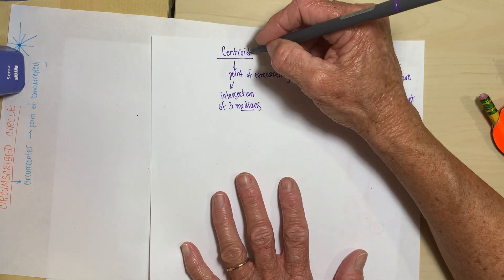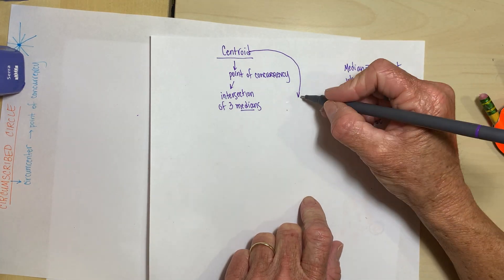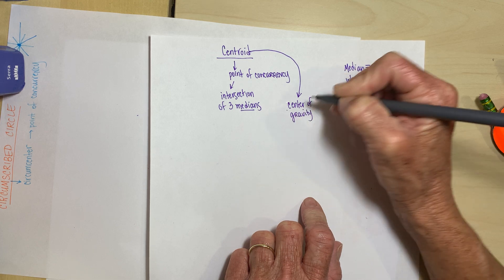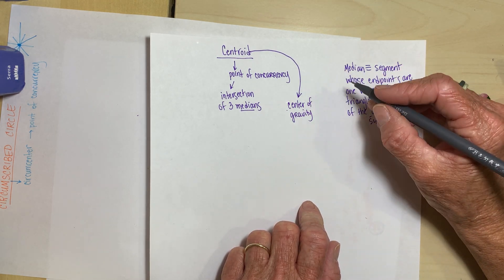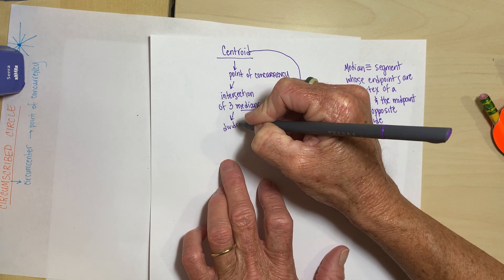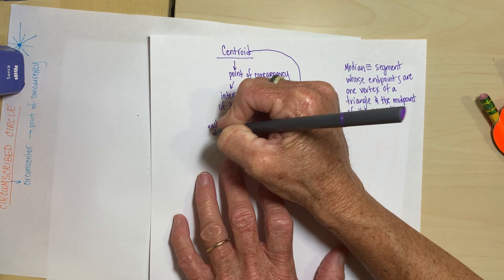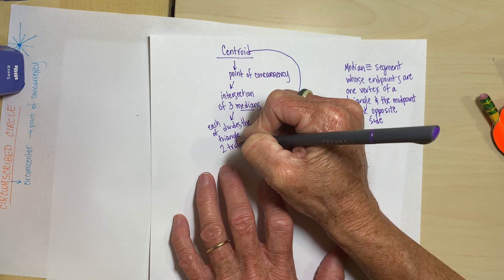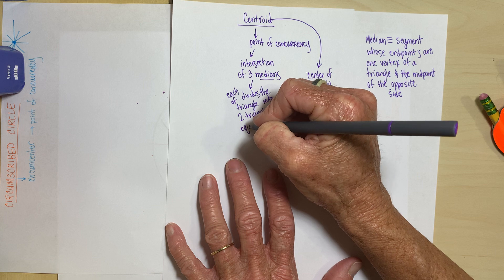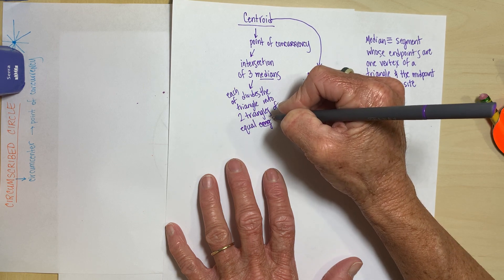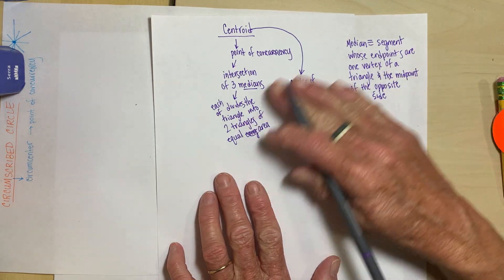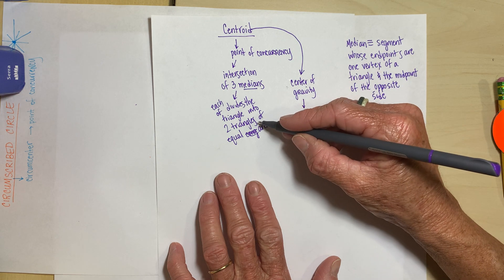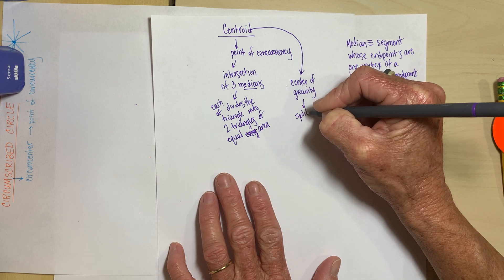Now the centroid has some really cool characteristics that you saw and hopefully the exploration in class. It is the center of gravity. So you can balance the triangle on the centroid. The medians, each of those medians, these three medians divide each, each one divides the triangle into two triangles of equal area. Now they aren't congruent, but they don't have to be congruent. Oops, sorry. I said the word congruent, of equal area. They don't have to be congruent to cover the same amount of flat surface. So every median does that. The centroid is the center of gravity and the centroid splits each of these medians into a two to one ratio. And we'll look at what that means in just a second.